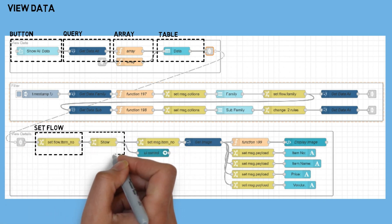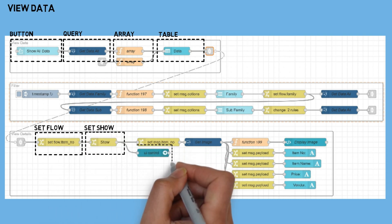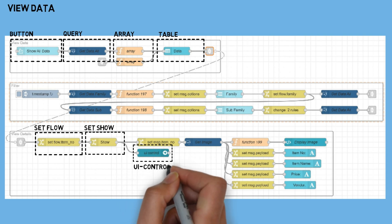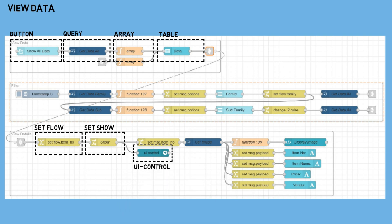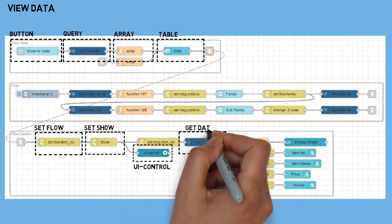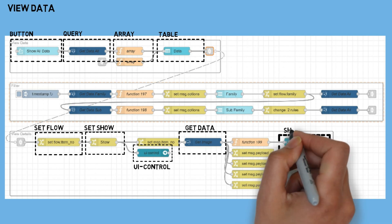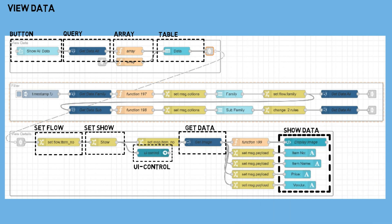First, the selected item number from the table is retrieved. Then a Change node sets the Show property to display the dialog group by connecting it to the UI Control node. Next, based on the retrieved item number, a select query is executed to fetch the corresponding data. The retrieved data is then displayed in text widgets and a template widget within the dialog group, including the image.